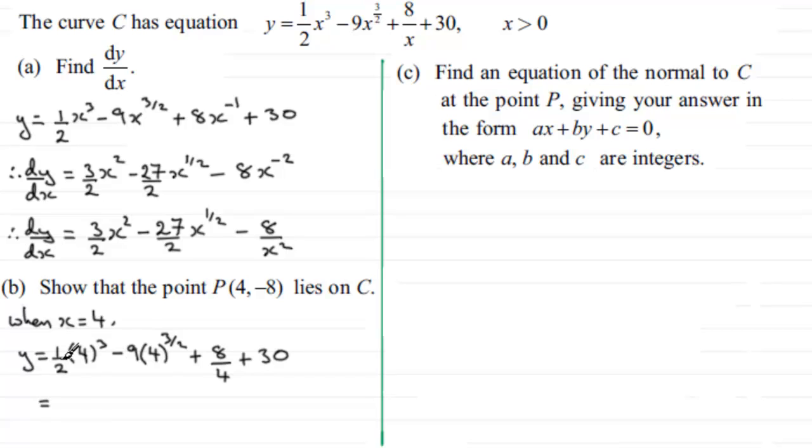4³ is 64, half of 64 is 32. For 4^(3/2), we square root 4 to get 2, then cube it to get 8. So -9 × 8 = -72. 8 divided by 4 is 2. Therefore: 32 - 72 + 2 + 30 = -8.